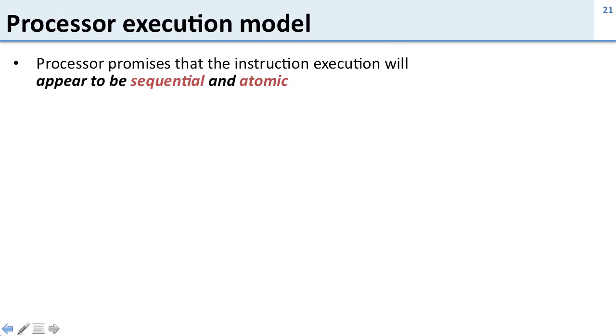So processor execution model. Processors promise two things to you. They promise that they will execute instructions in a way that appears to be sequential and atomic.